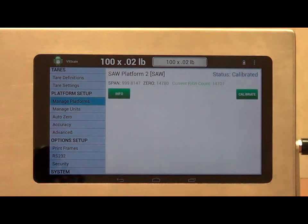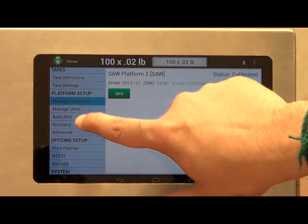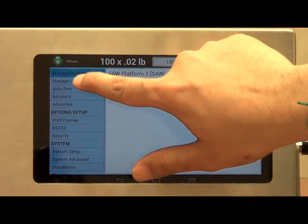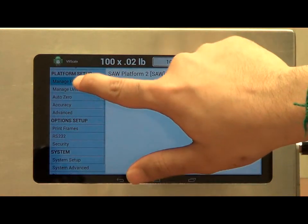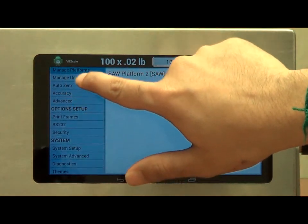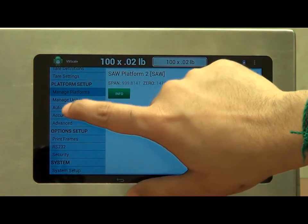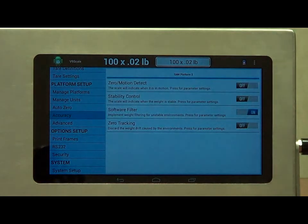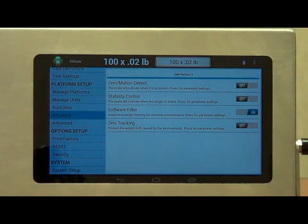Other features of the scale include accuracy settings. I can easily navigate the left-hand side of the screen to see what settings I want to go to. This time, I want to go to the accuracy. Over here, we have a range of options for controlling the accuracy of the scale, such as zero motion detect, stability control, software filter, and zero tracking.